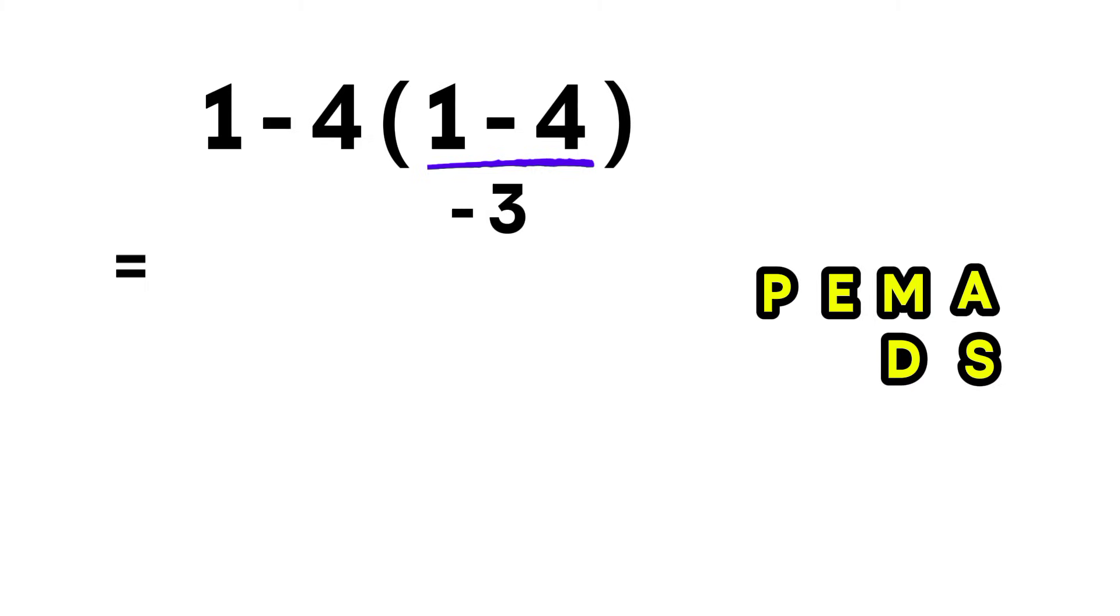Now, the whole expression becomes 1 minus 4 times negative 3. At this stage, we have 1 subtraction and 1 multiplication. And multiplication always comes before subtraction.